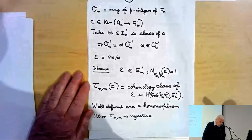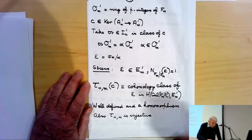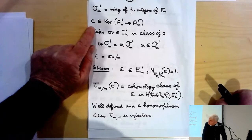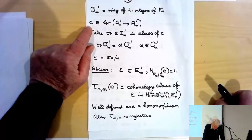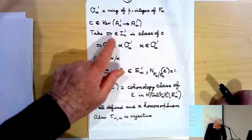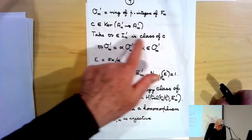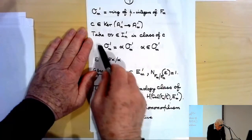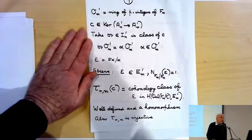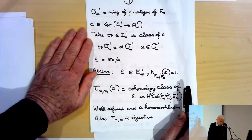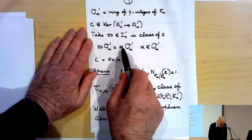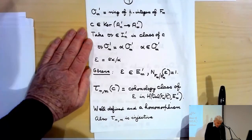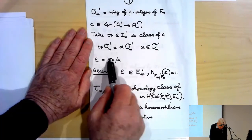Take c in the kernel of A_n' → A_m'. In concrete terms, take an ideal a in I_n' belonging to the class c, and being in the kernel means that the ideal it generates in O_m' is principal: a·O_m' = α·O_m' for some α in O_m'. Now take ε = σ(α)/α. That is the whole idea of the proof.